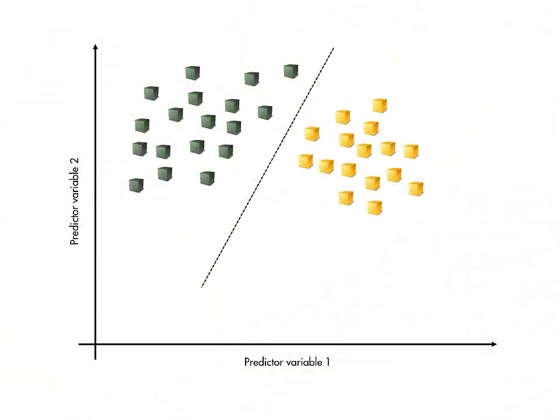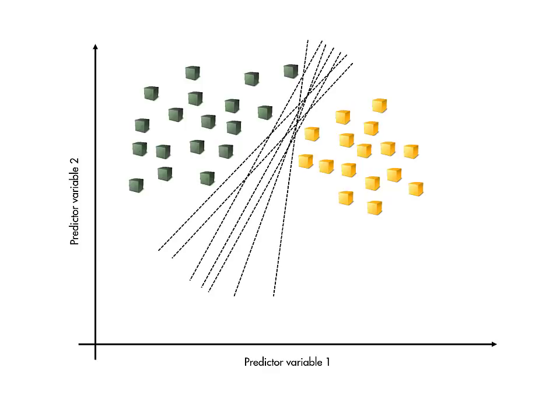A simple way to classify observations into two classes is to draw a linear boundary between them. However, even if the data is perfectly separable in this way, there are many possible linear boundaries that could be used. Which is the best?